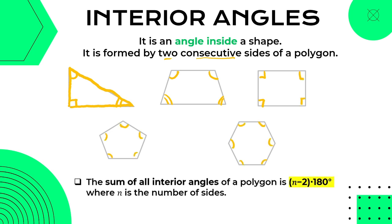The number of interior angles also depends on the number of its vertices. The sum of all the interior angles of a polygon is equal to the formula (n − 2) × 180 degrees, where n is the number of sides. We can use this formula to compute kung ano nga ba yung sum ng lahat ng interior angles.